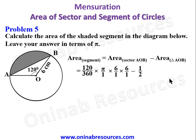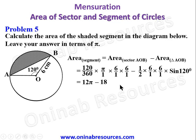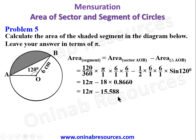Minus ½ × 6 × 6 × sin 120°. Simplifying: 120/360 = 1/3, so (1/3) × π × 36 = 12π. Then 36/2 = 18, and sin 120° = 0.8660, giving 18 × 0.8660 = 15.588. So the area of the segment is (12π − 15.588) square centimeters, to four significant figures, leaving the answer in terms of π.